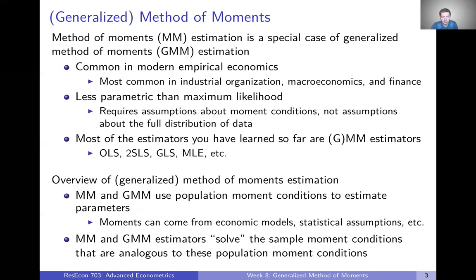Let's start with an overview. Just to fix some terminology: there are two different estimators — the method of moments estimator and the generalized method of moments estimator. Method of moments is just a special case of the more general GMM. We'll start by talking about method of moments and then talk about the more general case. Whichever one we're talking about, they are common estimation methods used in modern empirical economics, most common in industrial organization, with lots of applications in macroeconomics and finance as well.